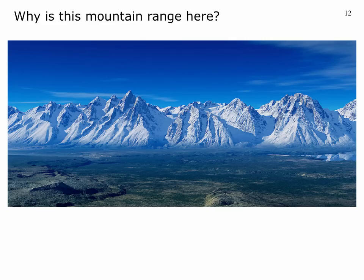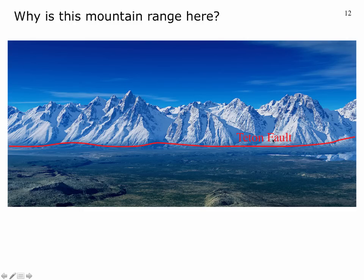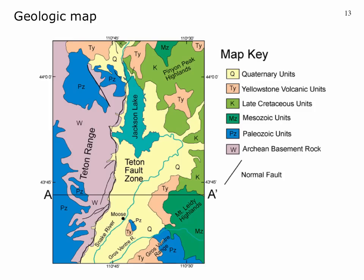Let's talk about the Teton Fault. Looking west at the Teton Range, the answer to why this range is right here is because of the Teton Fault — a break in the Earth's crust exposed at the base of that mountain range, and the main reason why we have these mountains right here.